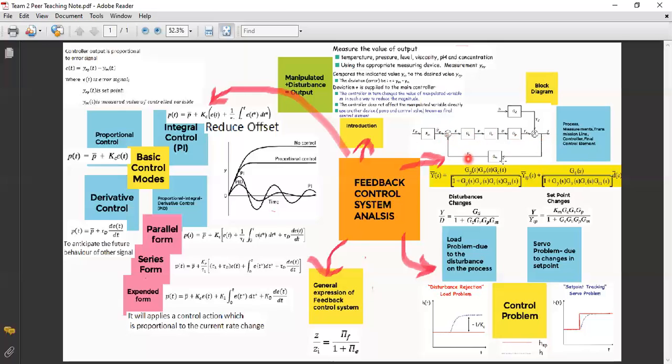And also to evaluate this block diagram, to evaluate this block diagram, the performance of the control system, we need to know how the control process responds to the changes of D and YSP. And as you can see, there are two control problems, which is load problem and also servo problem.